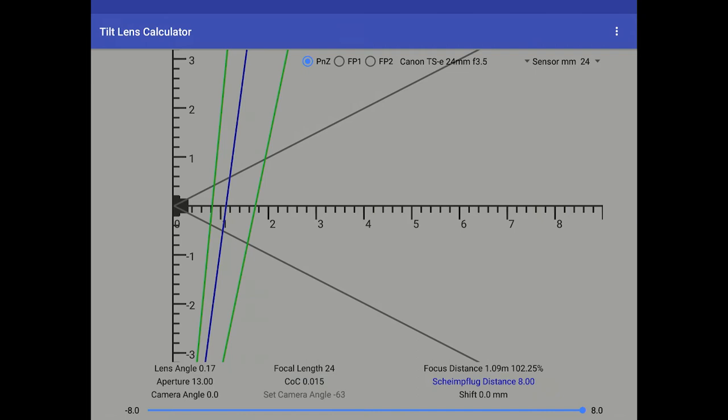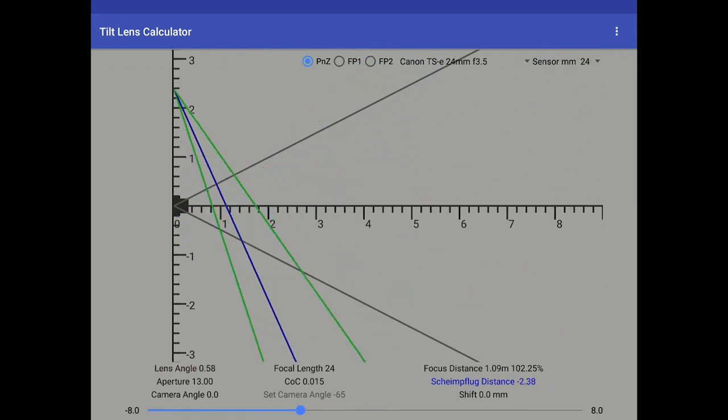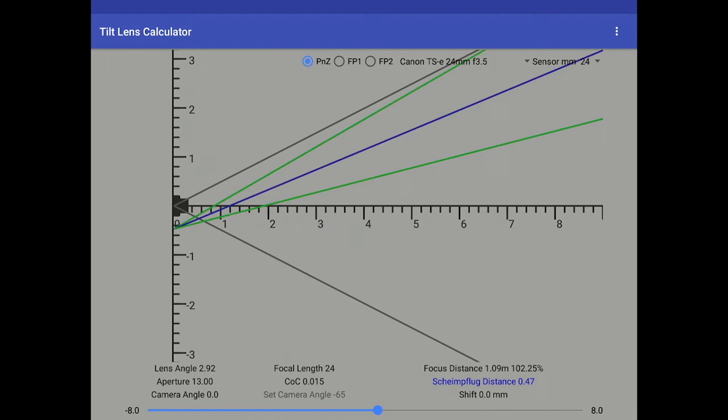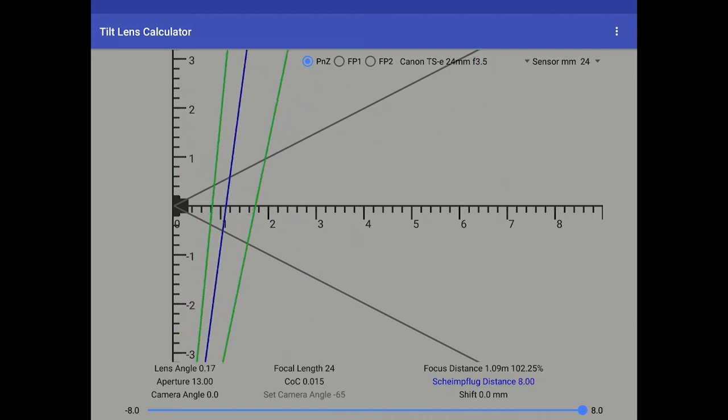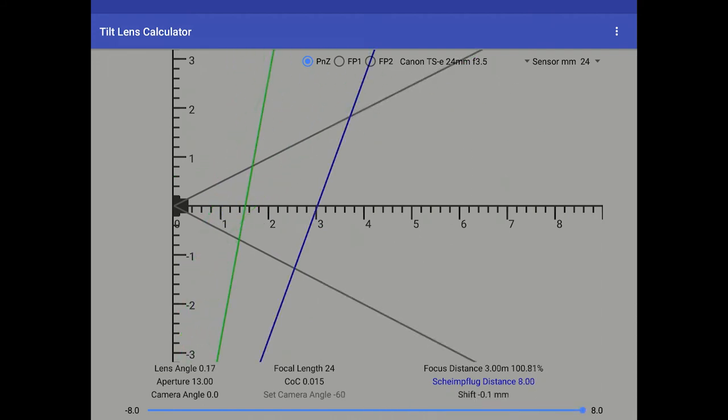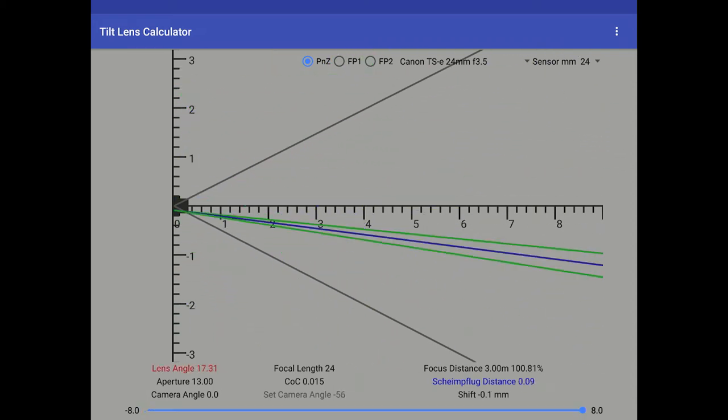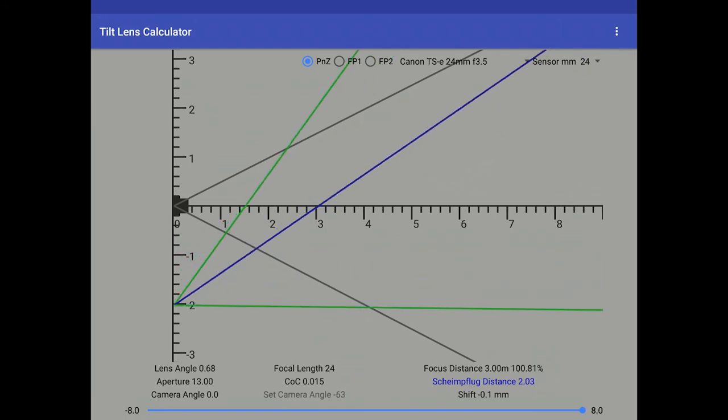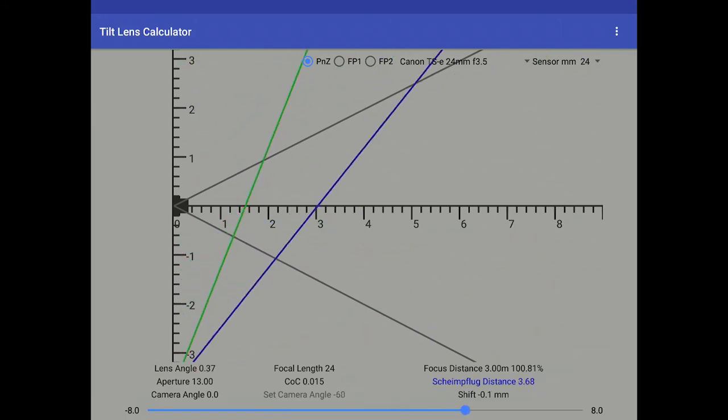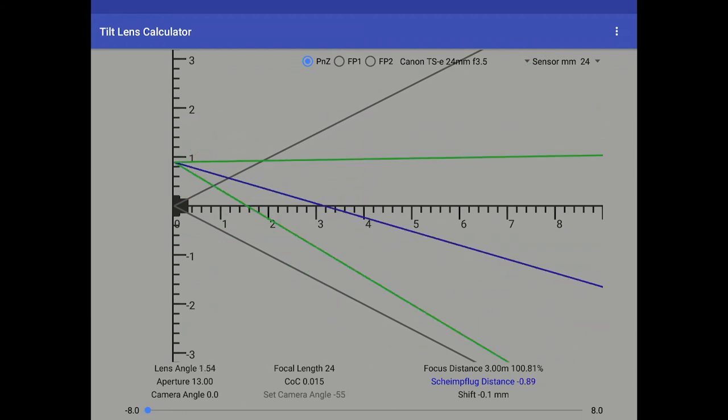Scheimpflug distance. This enables you to set the distance of the Scheimpflug distance. So you can go from minus 8 meters from one side of the camera to 8 meters the other side. If you press to the left of the Y axis, you can set the Scheimpflug distance that way as well. So you've got the two options. Use the slider, press to the left of the Y axis.